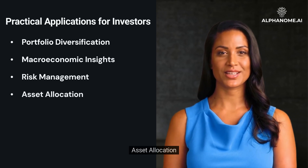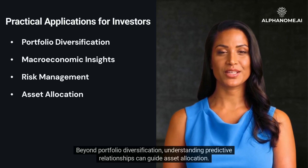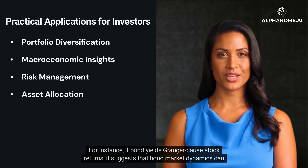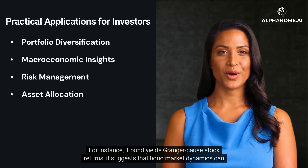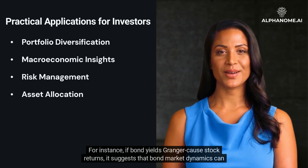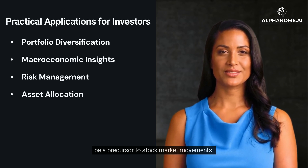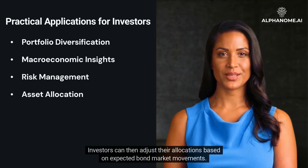Asset Allocation: Beyond portfolio diversification, understanding predictive relationships can guide asset allocation. For instance, if bond yields Granger-cause stock returns, it suggests that bond market dynamics can be a precursor to stock market movements. Investors can then adjust their allocations based on expected bond market movements.